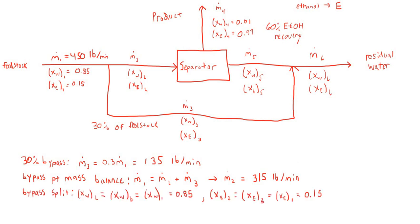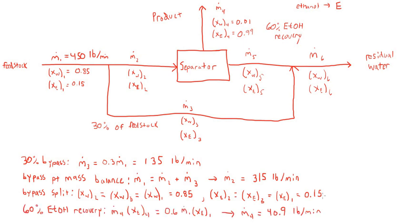The next thing we can calculate is the mass flow rate of the product stream leaving the separator. Since we know that 60% of the ethanol from the feedstock is recovered here, we calculate 60% of the ethanol by weight originally in the feedstock and set that equal to the mass flow rate of the product stream times the ethanol mass fraction of the product stream. Doing this, M.4 is 40.9 pounds per minute.